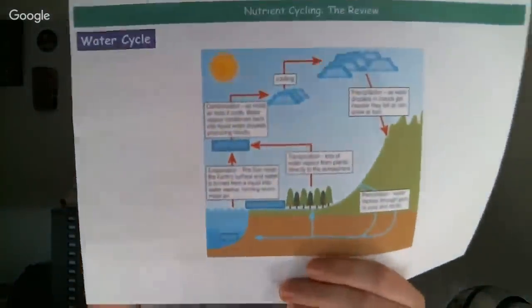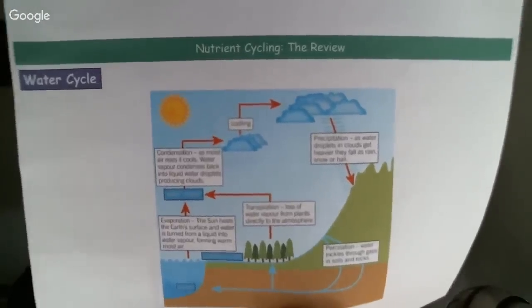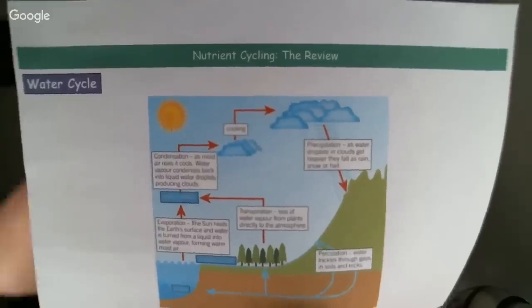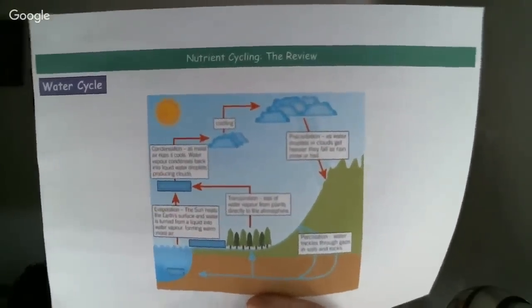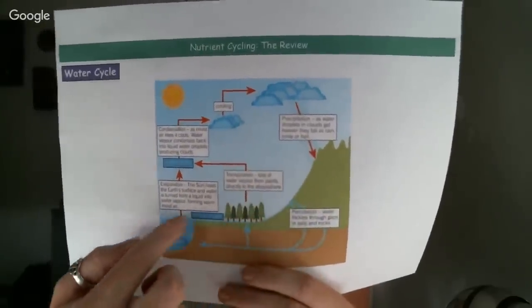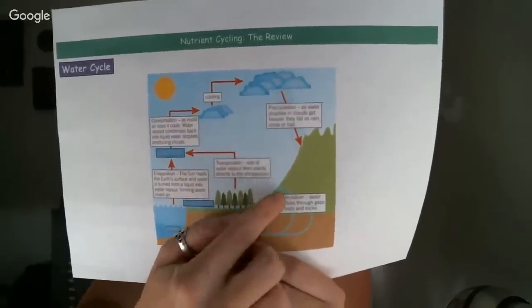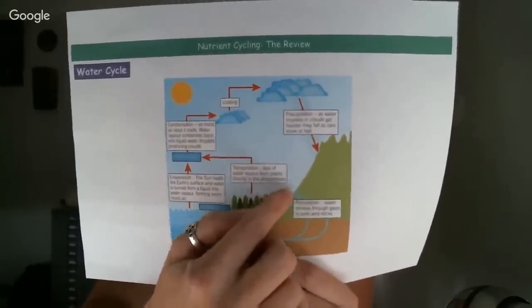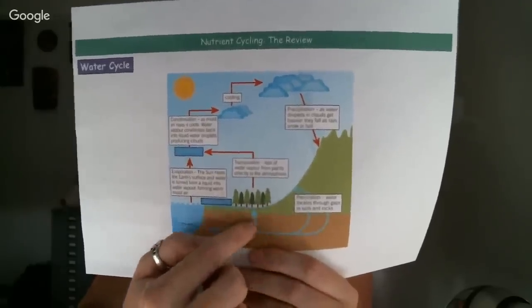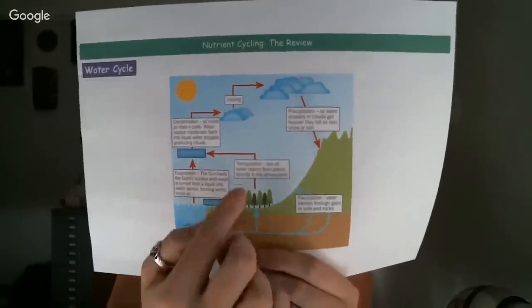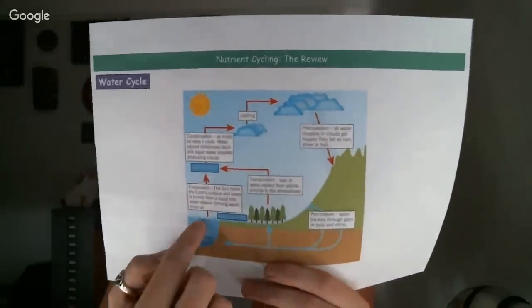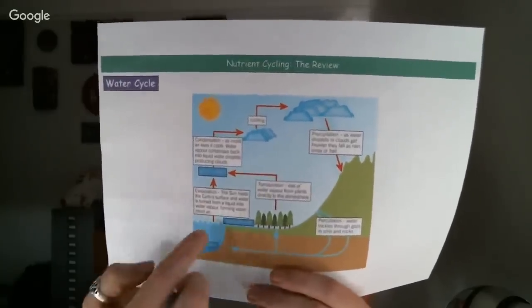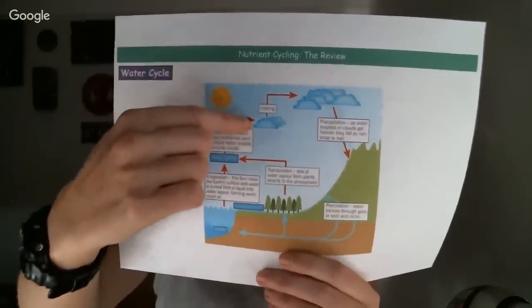Second cycle is the water cycle. Starting with our clouds: precipitation is where water falls from the clouds and hits the land. Some runs straight off into rivers, lakes, and oceans. Some goes through the ground in a process called percolation — it trickles through gaps between soil and rocks into the water table. Water is absorbed by the roots of plants and lost through transpiration, which is the loss of water vapour from the aerial parts of a plant. Water vapour is joined by evaporated water from oceans and lakes; as it rises it cools and condenses to make clouds, then precipitation once more.